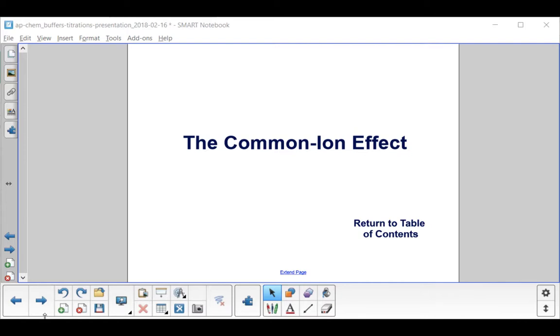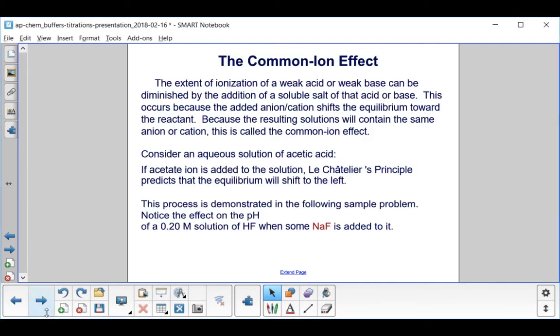In this section, we're going to discuss the common ion effect. The extent of ionization of a weak acid or weak base can be diminished by the addition of a soluble salt of that acid or base. Why does this happen? Because the added anion or cation shifts the equilibrium toward the reactant. Because the resulting solutions will contain the same anion or cation, this is called the common ion effect.